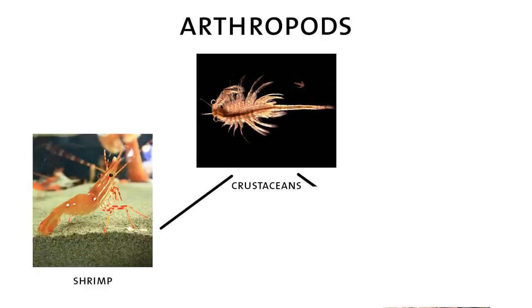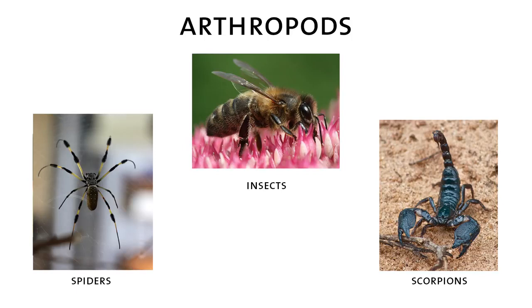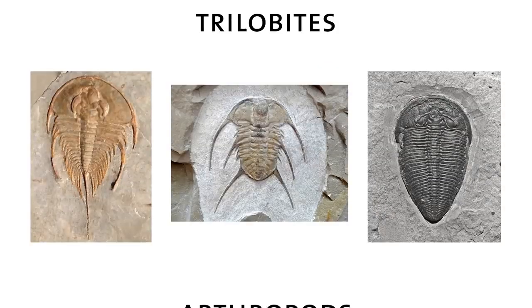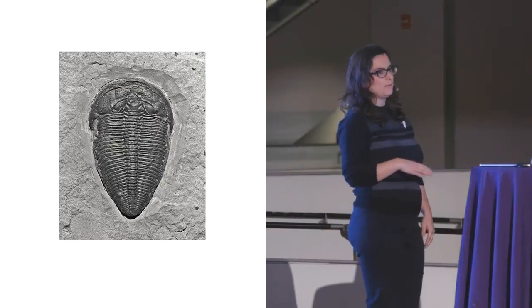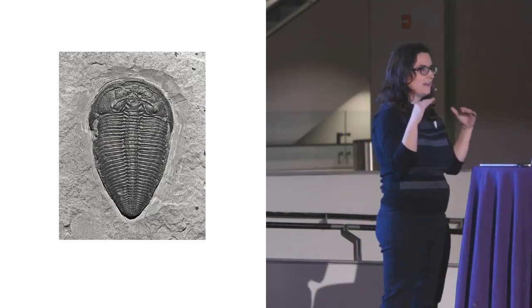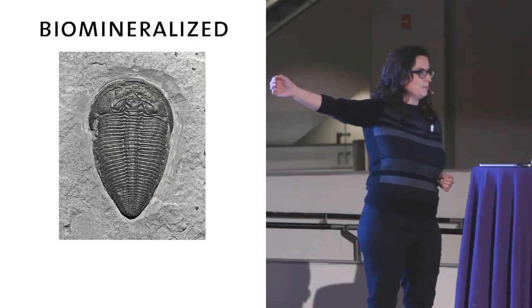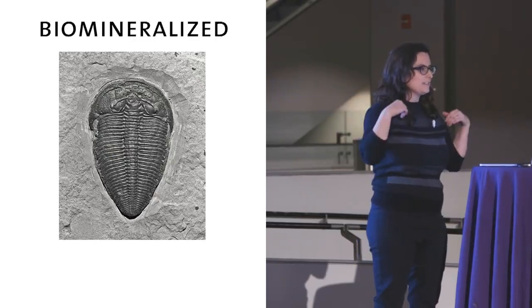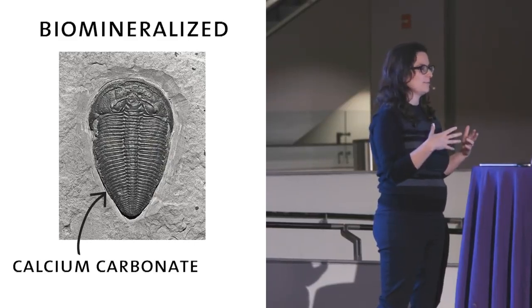Then of course we have arthropods. Living arthropods today include things like crustaceans, shrimp, lobsters, spiders, insects, scorpions. But the first convincing arthropod in the fossil record is the trilobite. Trilobites also make up a very large percentage of the arthropod fossil record, and the reason for this is that this exoskeleton was really heavily biomineralized. What that means is that the animal was putting a lot of minerals into its exoskeleton, in this case calcium carbonate.